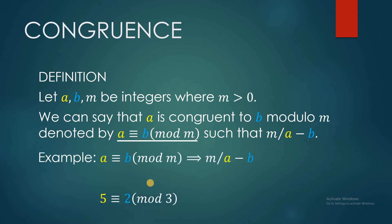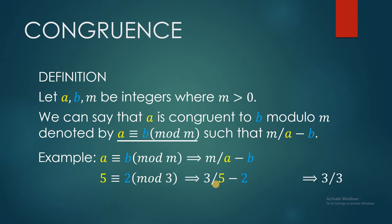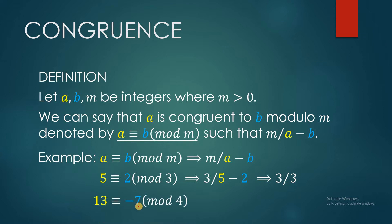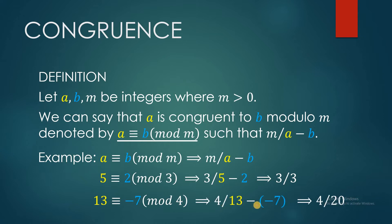Here is an example. If we have 5 congruent to 2 mod 3, this could be written as 3 divides 5 minus 2, or 3 divides 3, because 5 minus 2 is equal to 3. We have another one: 13 is congruent to negative 7 modulo 4. This can be written as 4 divides 13 minus negative 7, because 13 minus negative 7 is 20, and that is the same as 4 divides 20.